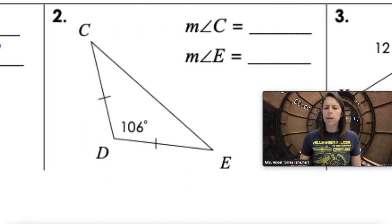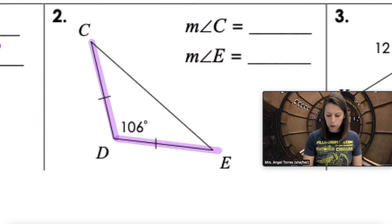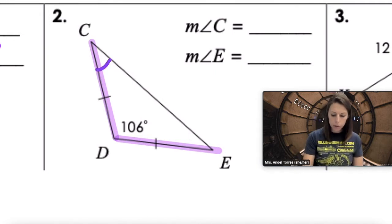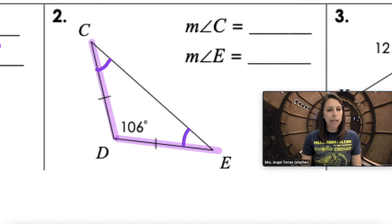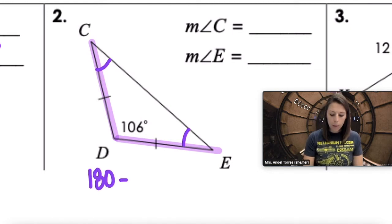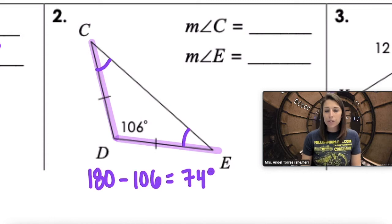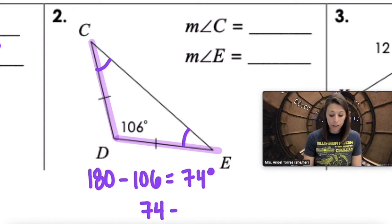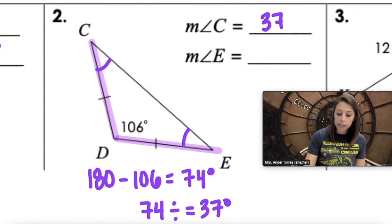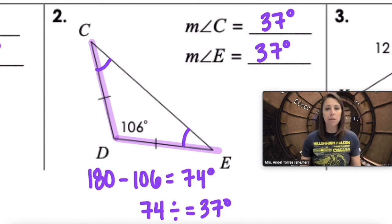In this triangle, we're given that the two legs are congruent, so the base angles are also congruent. If angle D is 106 degrees, then 180 minus 106 is 74 degrees. The two base angles have to be equal and add up to 74, so 74 divided by 2 is 37 degrees. The measure of angle C and angle E are each 37 degrees.